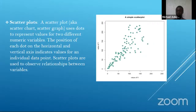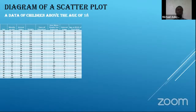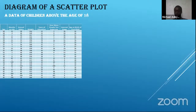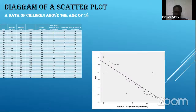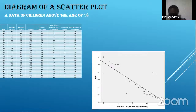Here's an example of a scatter plot showing data for children above the age of 18. We are plotting age against internet usage. You can see that children aged 18 to around 33 have very high internet usage — from roughly 7 to 20 hours per week. This tells us that people aged 18 to 33 use the internet almost all the time.